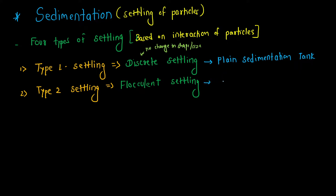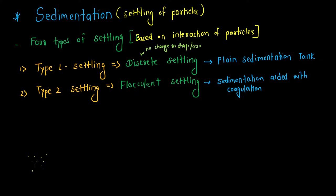The second type is called Type 2 settling, also known as flocculant settling. We find flocculant settling in sedimentation aided with coagulation. The discrete particles are alone particles which are settling. In the plain sedimentation tank, the particles which get removed — that is, in Type 1 settling — are nothing but the suspended solids.